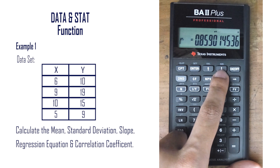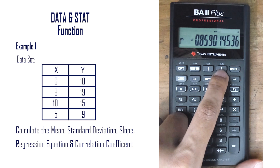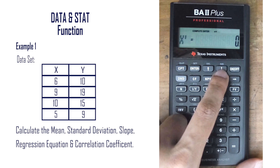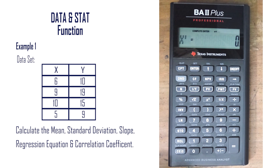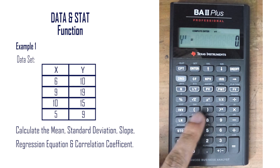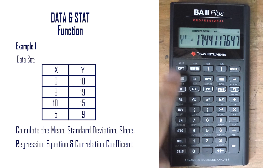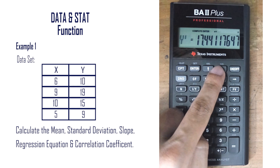The value r is the correlation coefficient, which is 0.85, indicating a strong relationship between x and y. If we scroll down further, we get x-prime, which is used to compute the y value for a given x value. If we enter 10 in x-prime, scroll down, and press CPT, we get the predicted y value of 17.44.